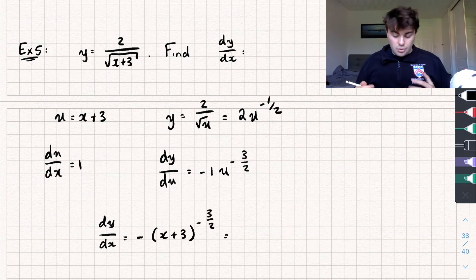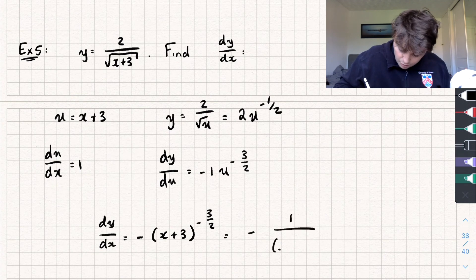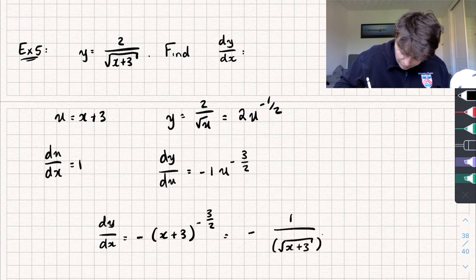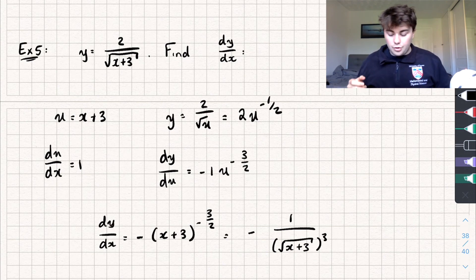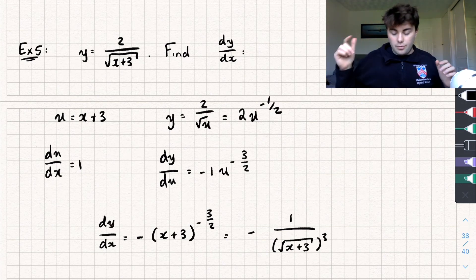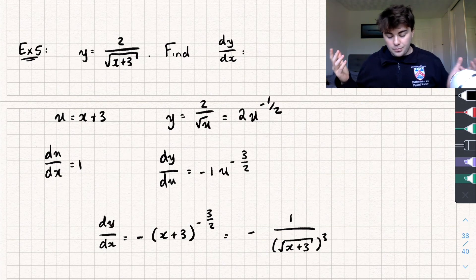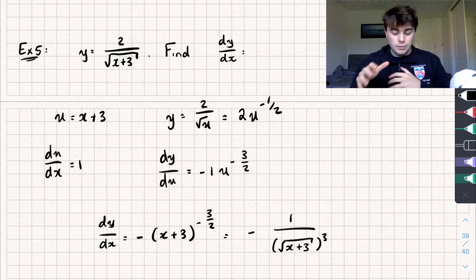If you wanted to, you could write this as negative 1 over the square root of x plus 3 all cubed, or equivalently (x plus 3) cubed under a square root — it's up to you. So that's it for this video, hopefully it was useful to see some worked examples.